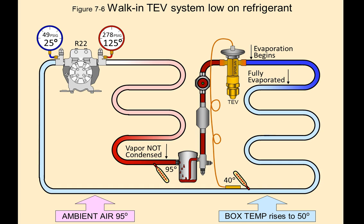So here is our walk-in cooler with normal operating pressures and temperatures. We have a suction side temperature of 25 degrees, a box temperature of 50 — so we have a TD of 5 degrees, which is normal. We have a condensing temperature of 125.